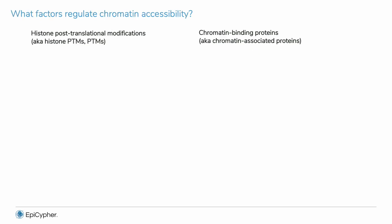So we have established the importance of chromatin accessibility to gene expression. But how is this regulated? What makes nucleosomes closer together versus farther apart on DNA? There are many pathways that regulate chromatin structure. Today we will be discussing histone post-translational modifications, or PTMs, and chromatin binding proteins.